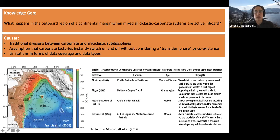So the question is what happens in the outboard region of a continental margin when mixed siliciclastic carbonate systems are active inboard? And we identify this as a knowledge gap. There are several reasons for that. One of them is the traditional divisions between carbonate and siliciclastic subdisciplines. Then the assumption that carbonate factories instantly switch on and off without considering potential transitional phases or the coexistence, at least for a period of time, between the two. And then there are also limitations in terms of data coverage and data types.